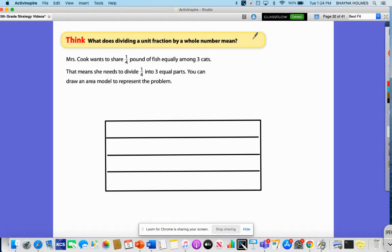This essential question asks what does dividing a unit fraction by a whole number mean? When you think about it, we have 1/4 pound of fish. We want to divide it equally among the three cats. What that means is that we're going to end up with a fraction because we're taking a fourth and we're going to take it apart into three sections, so we're going to have something even smaller.